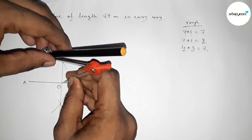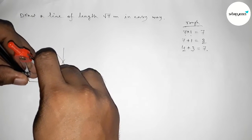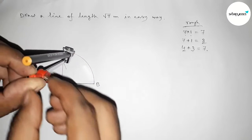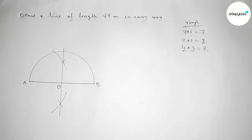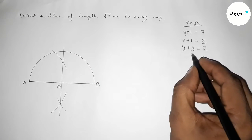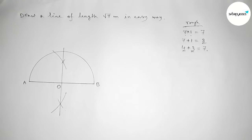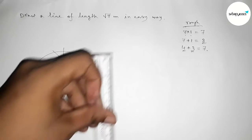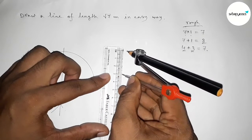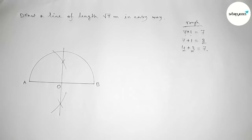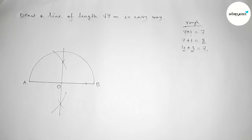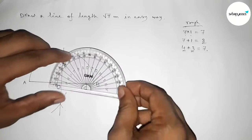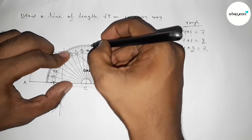Taking OA and OB as radius, drawing a semicircle through points A and B. Next, taking 3 centimeter using a scale and marking that length. Putting the compass on point O and cutting at a point C, so OC equals 3 centimeter.